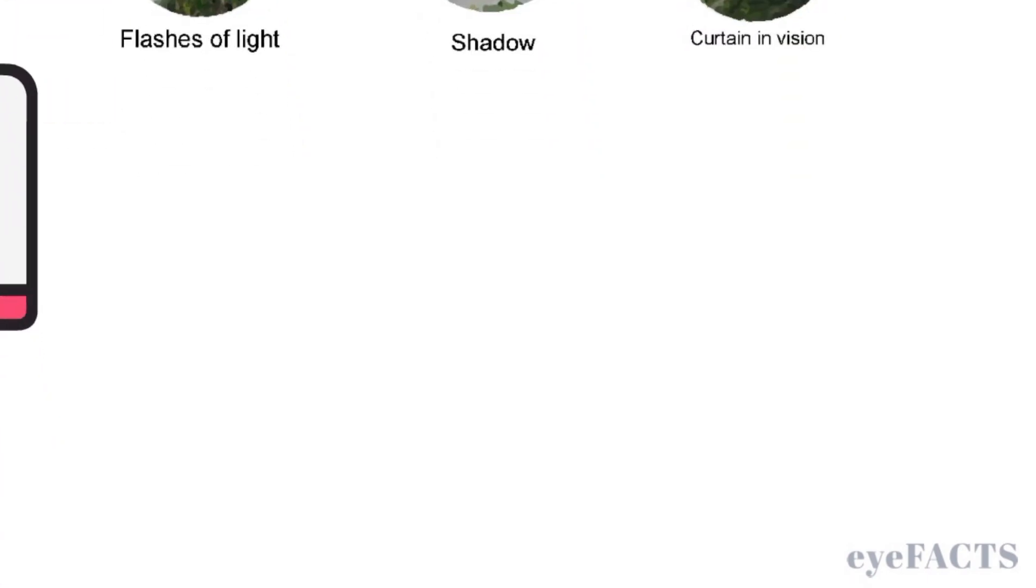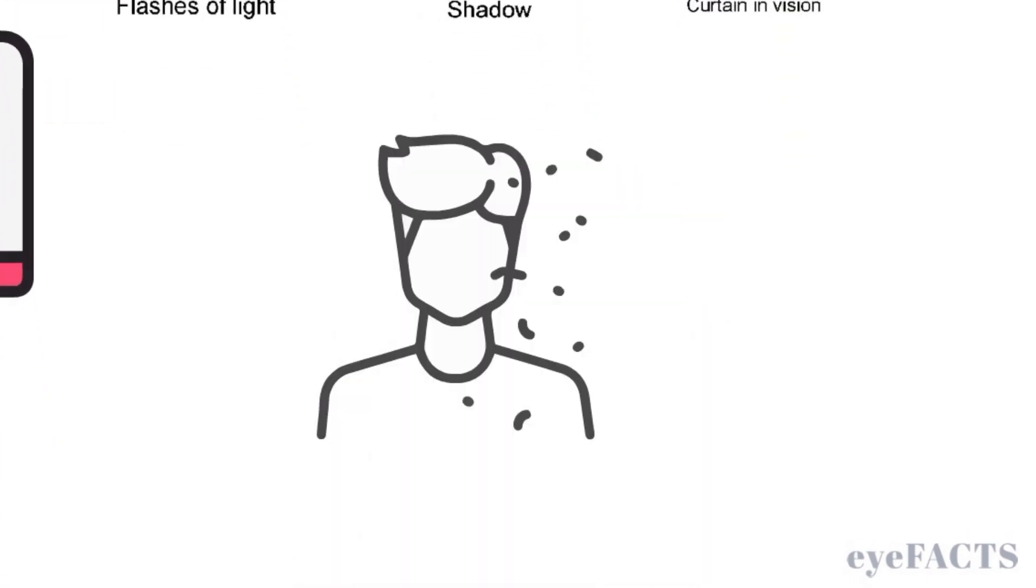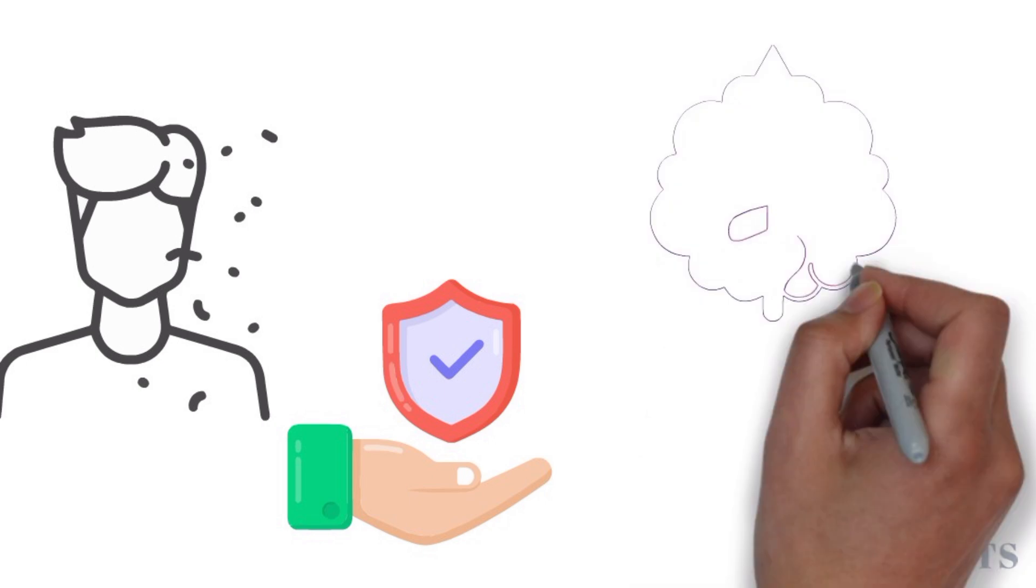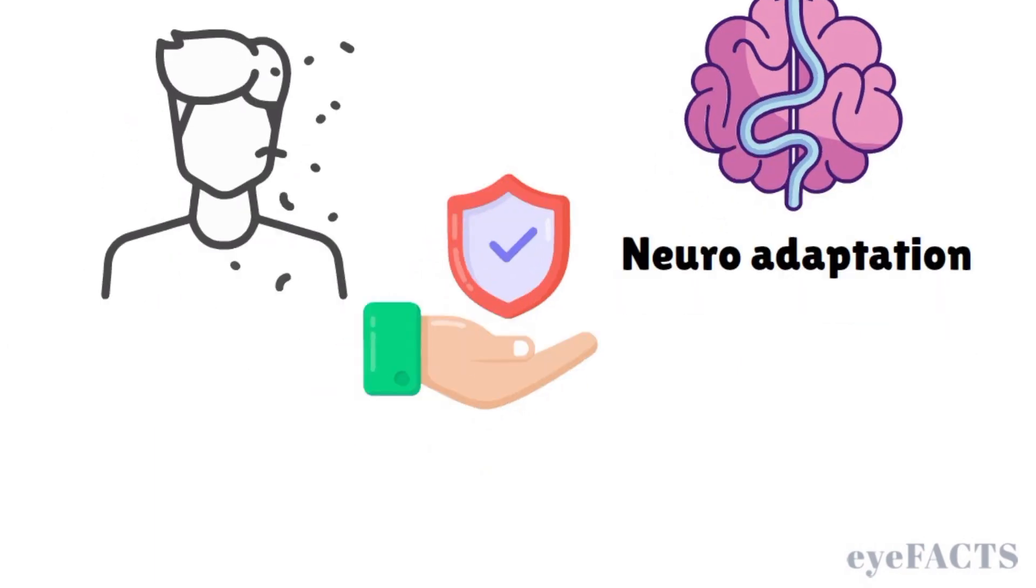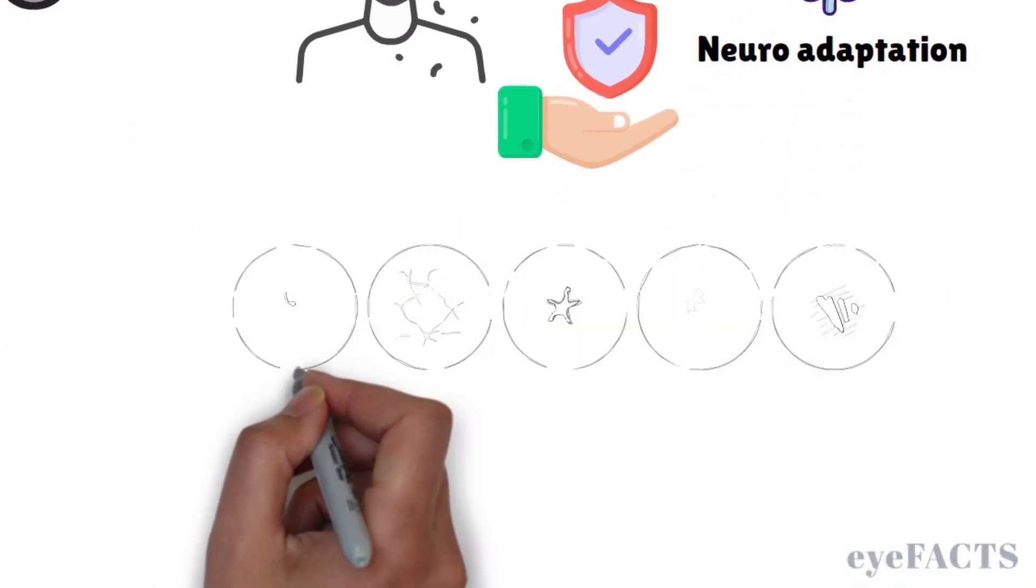Floaters themselves are usually harmless, and luckily over time, floaters will become less noticeable as your brain adapts and learns to filter them out through a process called neuroadaptation. But if floaters are persistent or significantly disrupt your vision, treatment options are available.